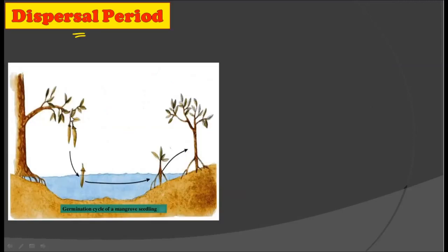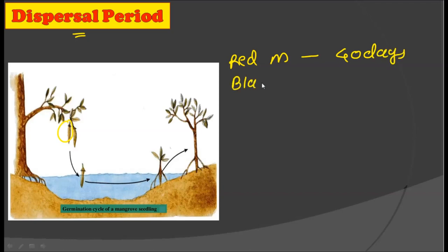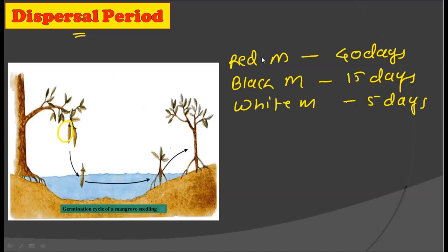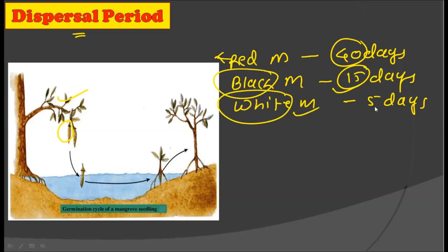The time period required for the propagule to fall off from the parent plant varies from species to species. In red mangroves, this period is 40 days. In black mangroves, this period is 15 days. And in white mangroves, this period is 5 days. So the propagule of red mangrove species will remain 40 days on the parent plant, black mangrove propagules remain for 15 days, and white mangrove propagules remain for 5 days. Within all these days, the propagule develops itself and then falls off from the parent plant.